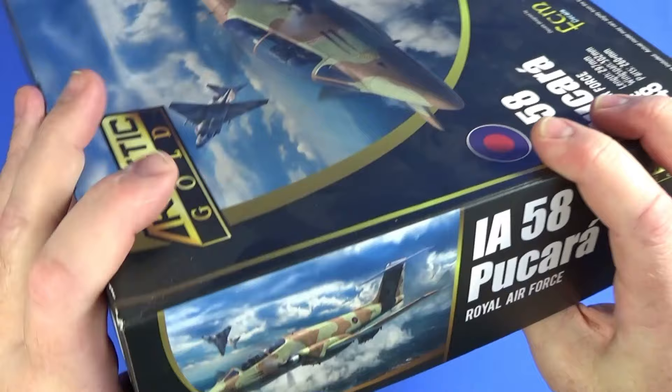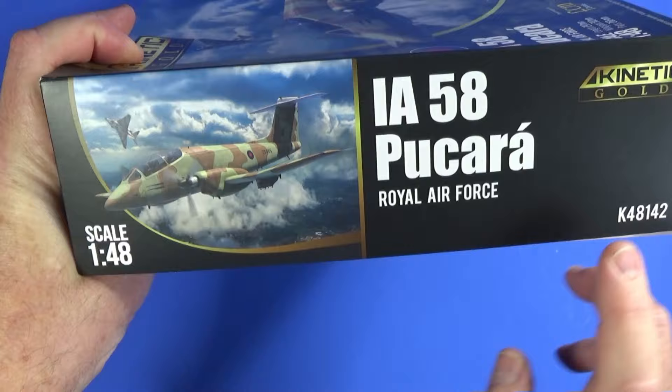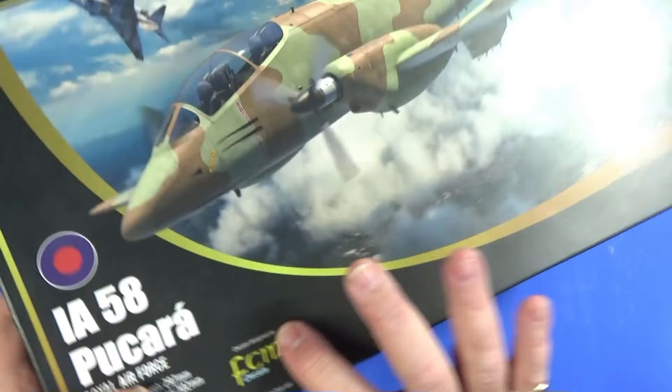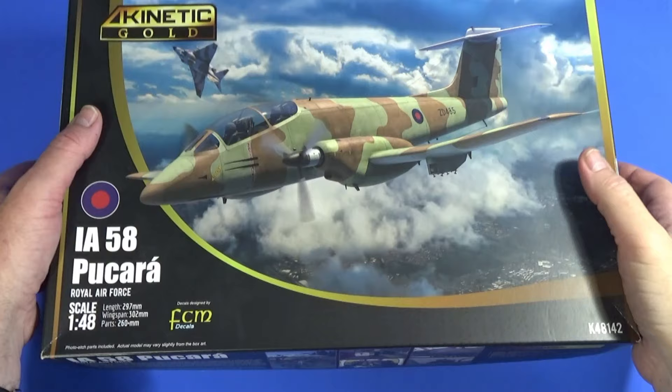The short sides just essentially have a reboot of the cover, big bold letters, IA58 Pucara, Royal Air Force, product code and scale, just for when it's sitting on a shelf, not sitting on a shelf like that, presumably. Okay, let's have a look and see what you get inside the box.